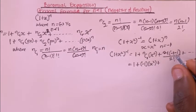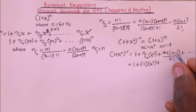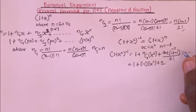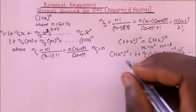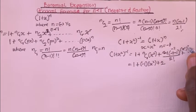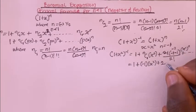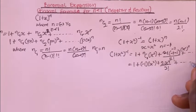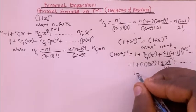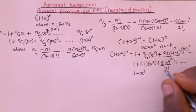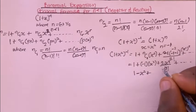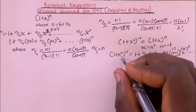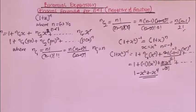Simplifying: nC1 is n, so we get −1 times x². Then (−1)(−2) divided by 2! gives plus 2 divided by 2, times x⁴. So the expansion gives us 1 minus x² plus x⁴, plus other terms.